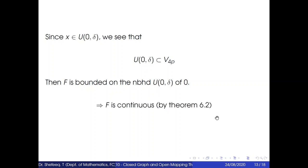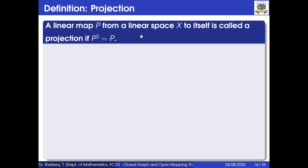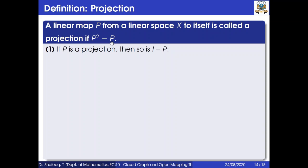Before going to the next theorem, we consider the definition of projection. A linear map p from a linear space X to itself is called a projection if p² = p. The first result is: if p is a projection, then so is I − p. We want to show (I − p)² = I − p.